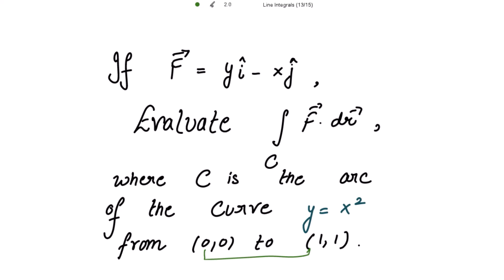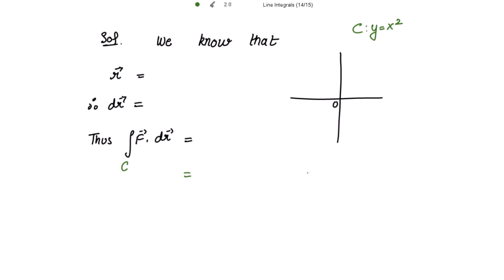This means that the limits of x are from 0 to 1 and the limits of y are from 0 to 1. The curve given to us is y equal to x square. This is your origin and the limits are given as from (0,0) to (1,1), so this is the point (1,1).